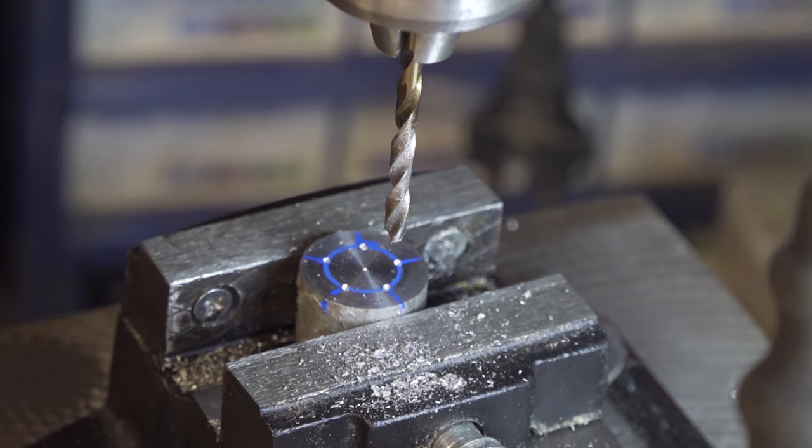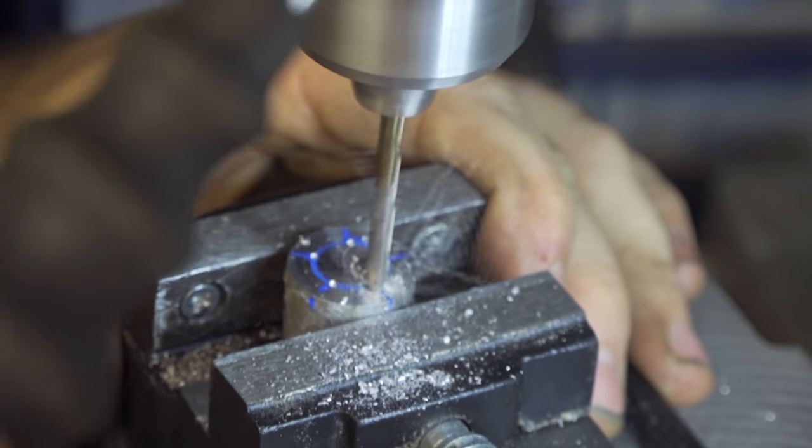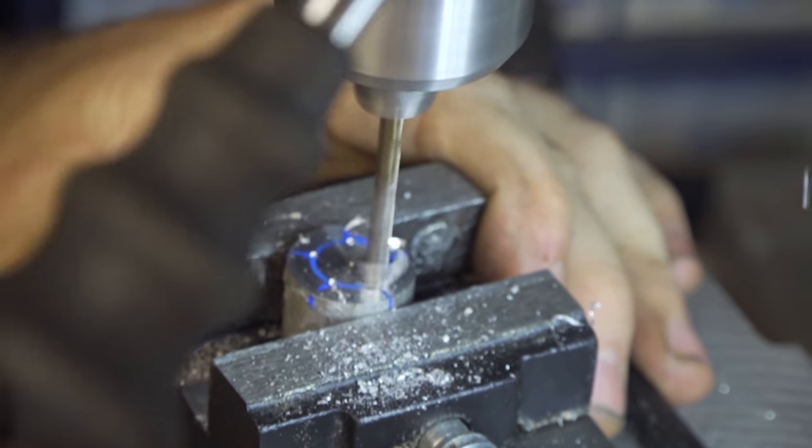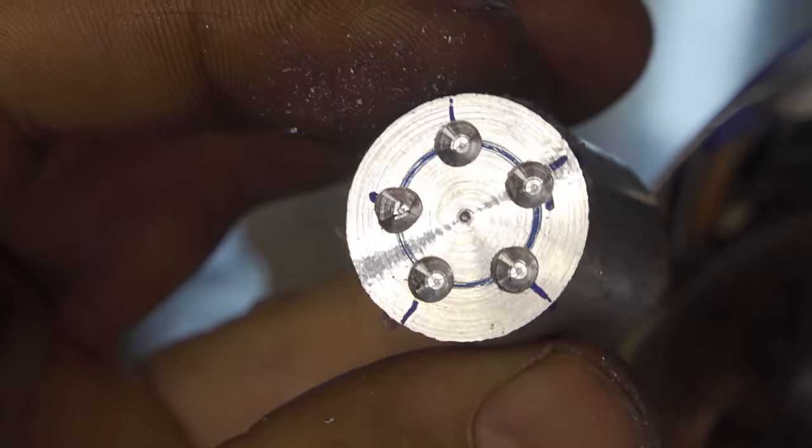So using my drill press I can control the depth of these holes. Because in this case I'm not going all the way through but I'm just punching a little hole inside that is one or two millimeters deep.